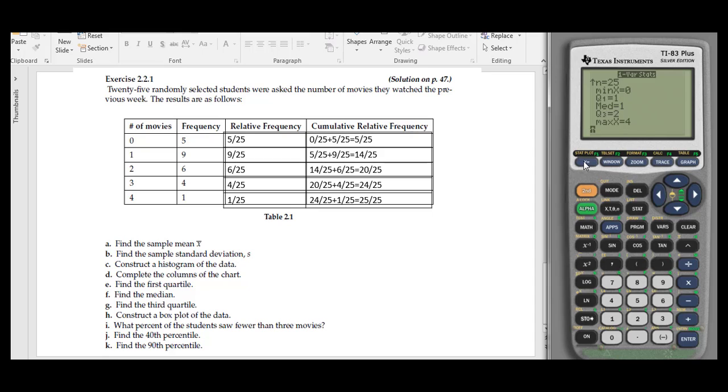Go to 2nd, Y equals, which brings in Stat Plot. Hit Enter for the first one to turn it on. I want to have a histogram, so come over to the histogram and hit Enter. It will ask where the frequencies are—those are all set.